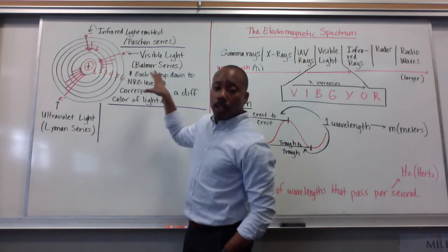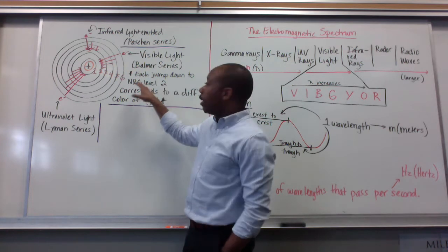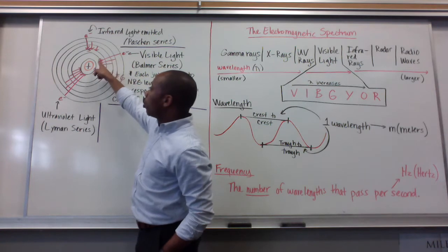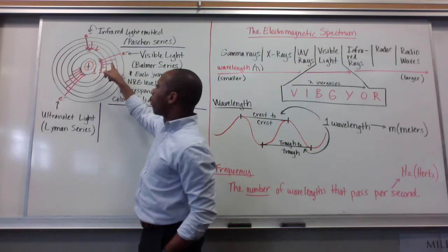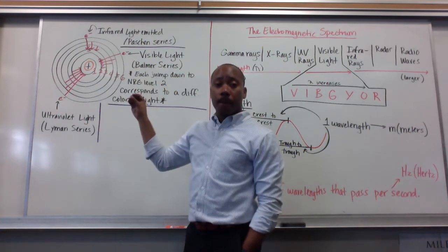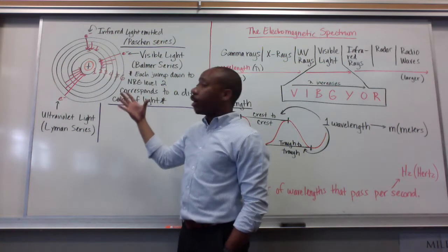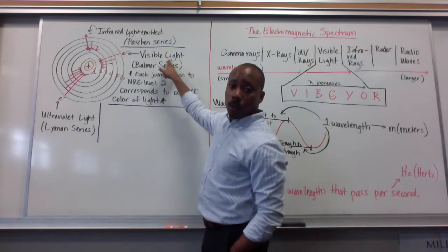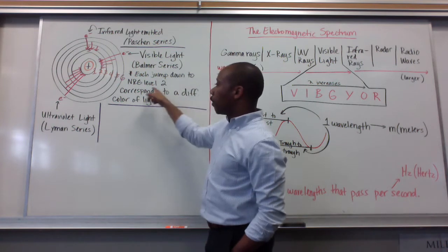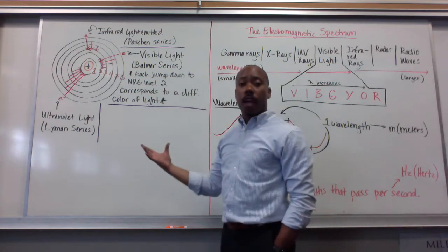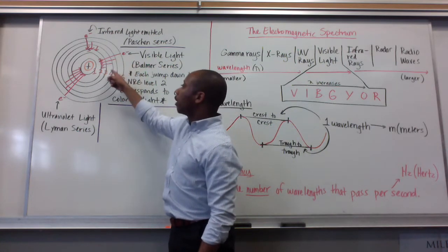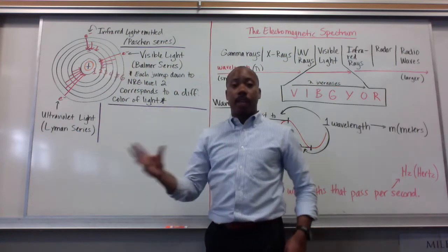And the one that we're focusing on mostly for this course is this next one. When the electron jumps from energy level 6 down to 2, or 5 to 2, or 4 to 2, or 3 to 2, the energy that's associated with that jump is going to reveal itself in the form of visible light. We call that the Balmer series. So each jump down to energy level 2 corresponds to a different color of light. We saw four different colors of light through our spectroscope, and we have one, two, three, four different energy jumps.